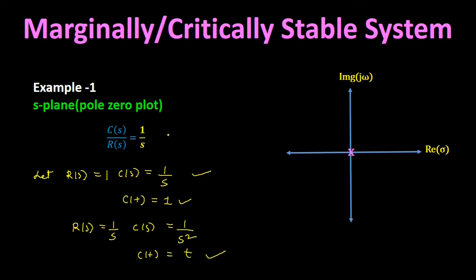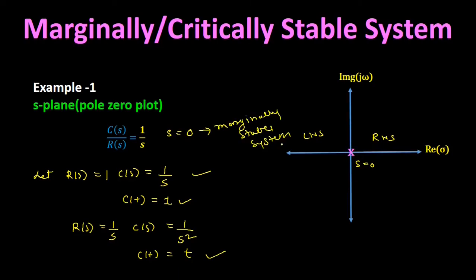Finding the poles of this transfer function gives a single pole at s = 0, that is, at the origin. The pole lies neither in the left nor right half of the s-plane, but between them. Therefore this is an example of a marginally stable system.